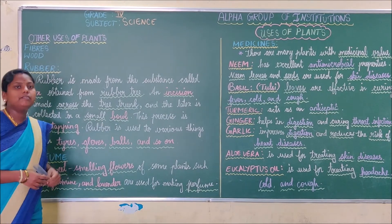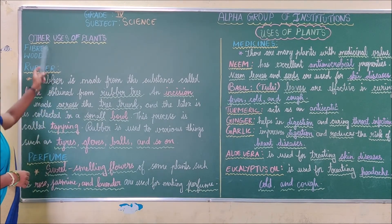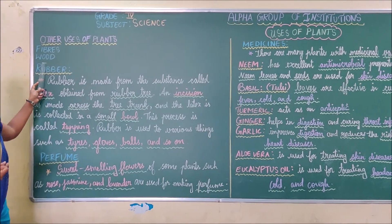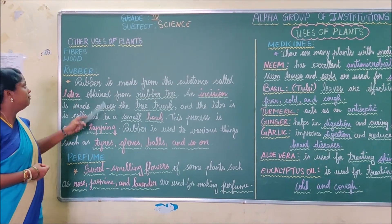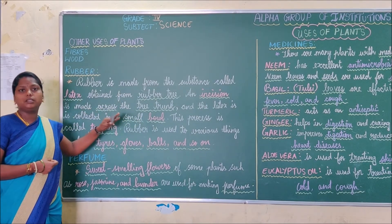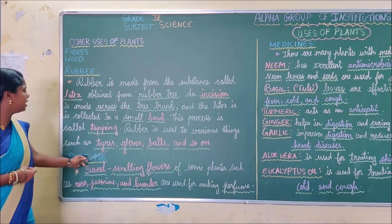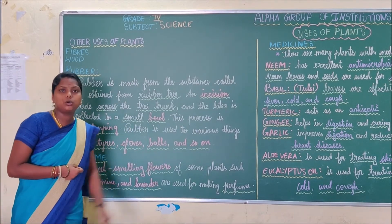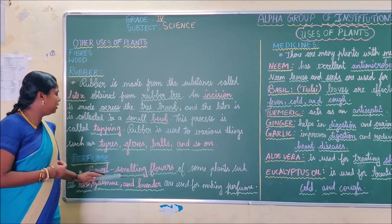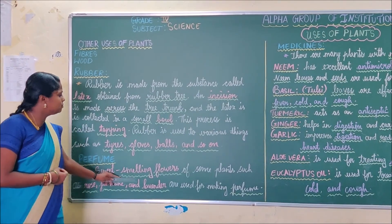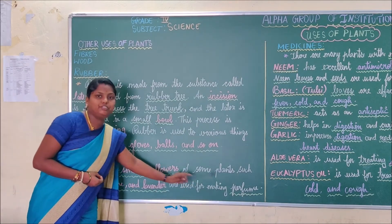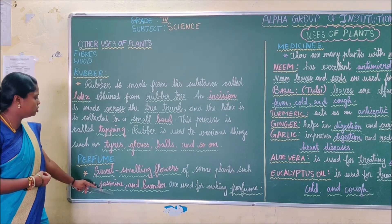Let us recap. Other uses of plants: first, fibers — cotton and nylon. Next, wood — hardwood and softwood, used to make furniture and paper. Then rubber, obtained from the rubber tree, used to make tires, gloves, balls, and so on. And perfumes — the good-smelling fragrance obtained from sweet-smelling flowers of plants like rose, jasmine, and lavender.